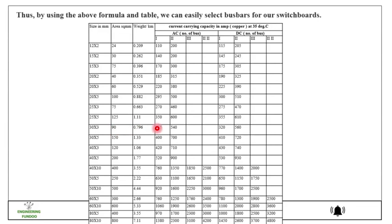Here you can see current carrying capacity in ampere for copper at 35 degree, for AC number of busbars and for DC also number of busbar. If we take one busbar it will be 315, and then if we take two busbar it will be 540. So this is the table from which we can select our size also.